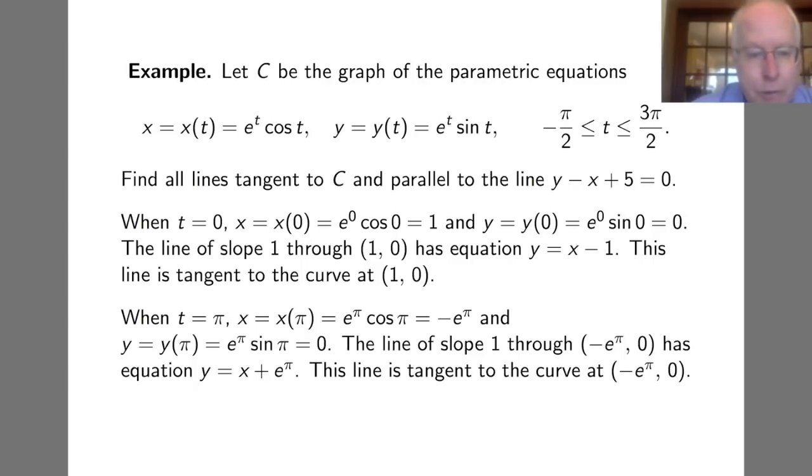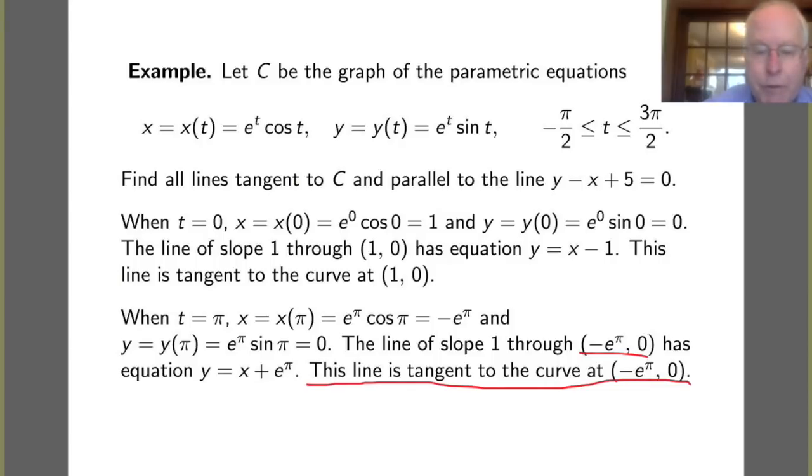The second t value was t equals π. We have to find x at π, which turns out to be -e^π, and y at π turns out to be 0. The other tangent line of slope 1 passes through the point (-e^π, 0) on C, and that has equation y = x + e^π. Here is the equation for the line tangent to the curve C at the point (-e^π, 0).